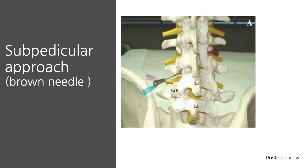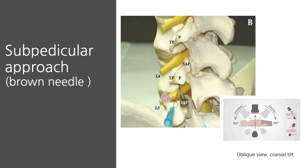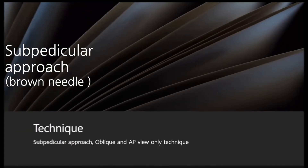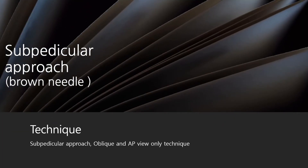This model demonstrates the subpedicular needle approach. Look at the nerve root, pedicle, and needle pathway. This picture is a look-down oblique view from the posterolateral side, which corresponds to the SIAM cranial tilt oblique view. This picture is a look-up oblique view from the posterolateral side, which corresponds to the SIAM caudal tilt oblique view.